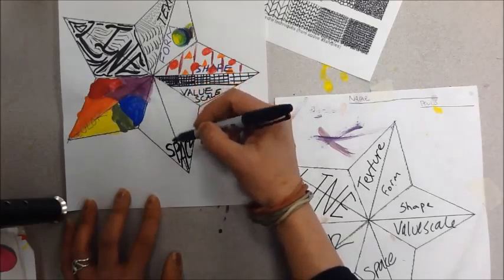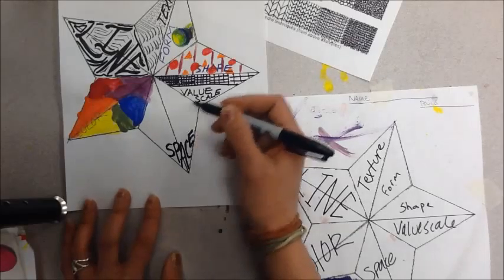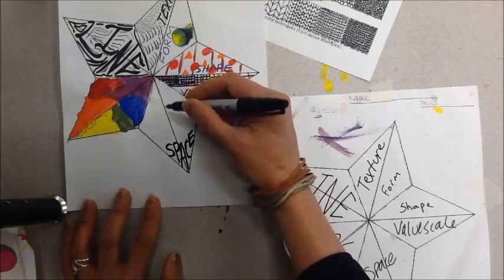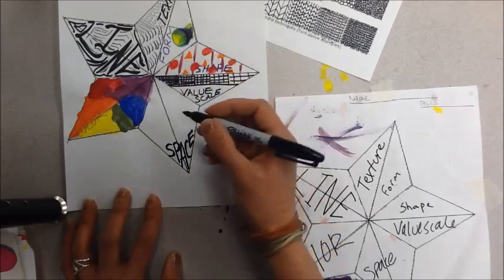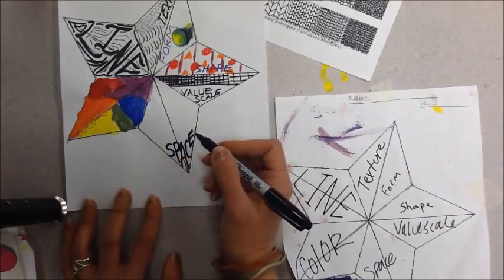Things get blurrier as they get further away. The color gets duller. We're only going to use Sharpies or pens for this, so the color isn't going to get duller. But you really want to utilize that objects get smaller.